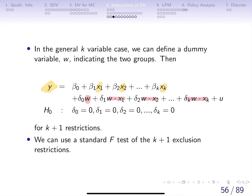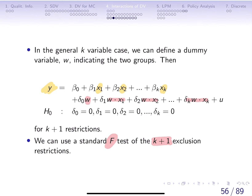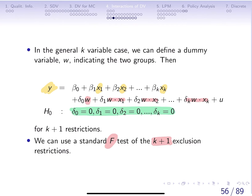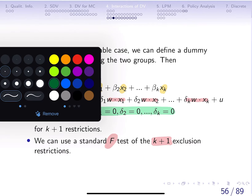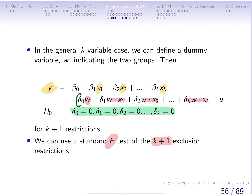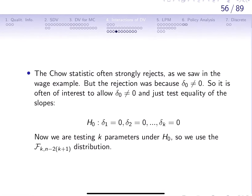You can use a standard F-test for the k+1 exclusion restrictions. The k+1 exclusion restrictions mean that we are setting all of the deltas equal to zero, including the delta on the dummy variable that's indicating your group.